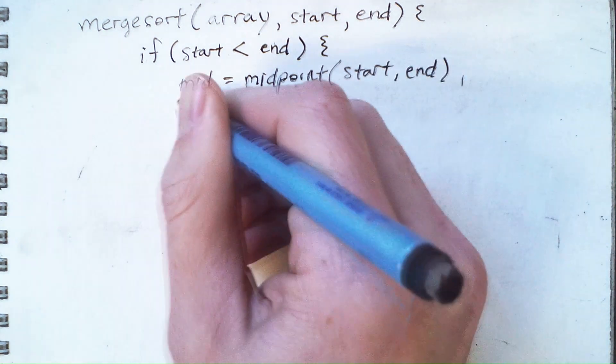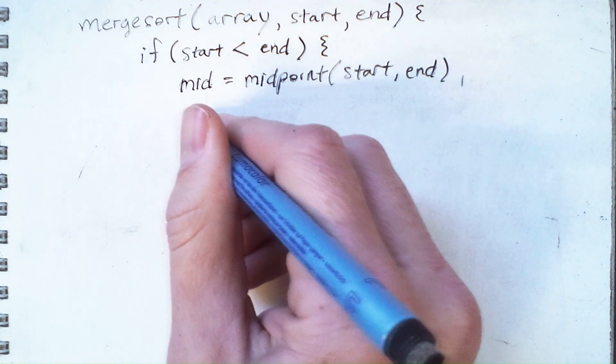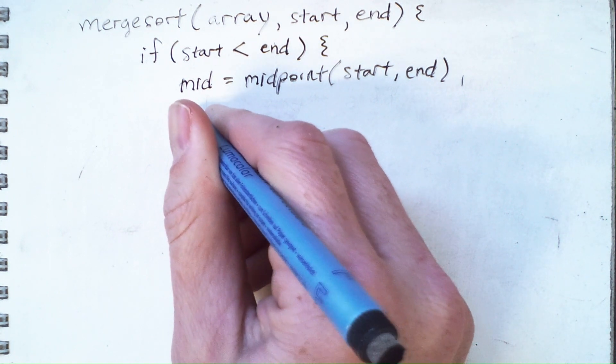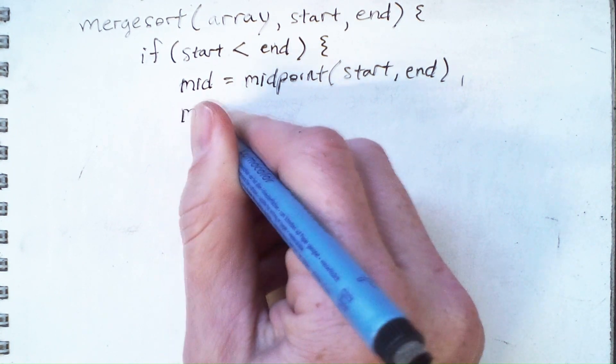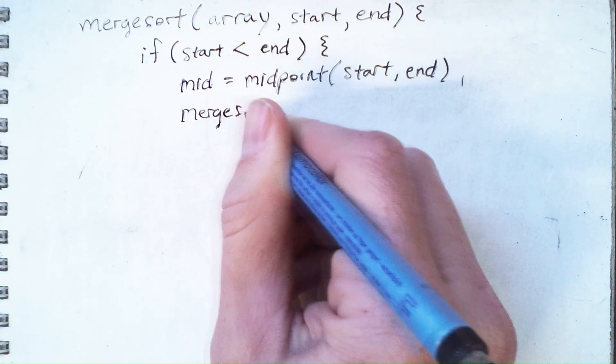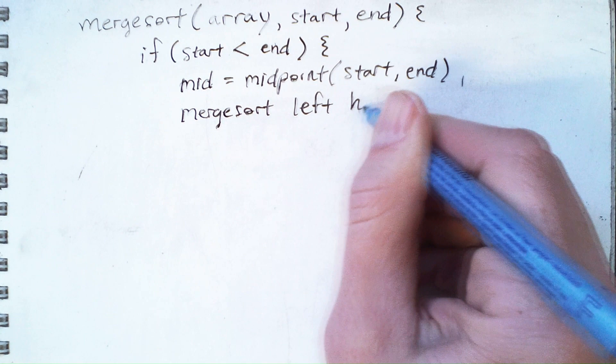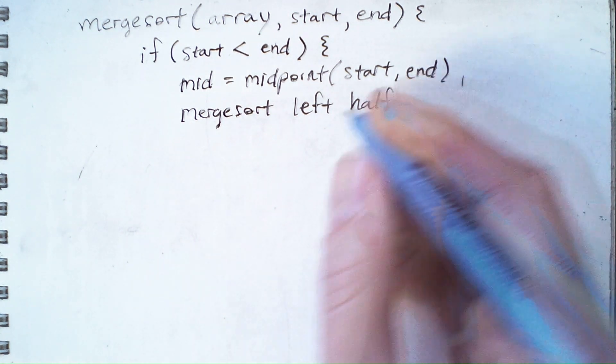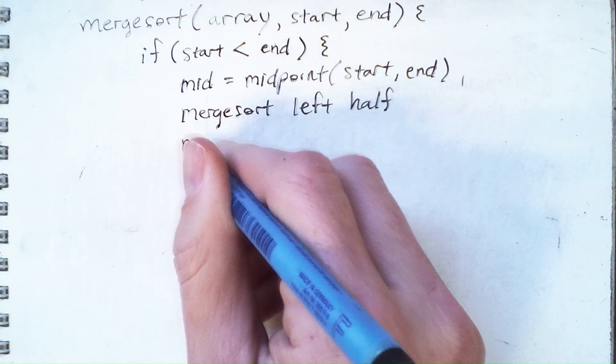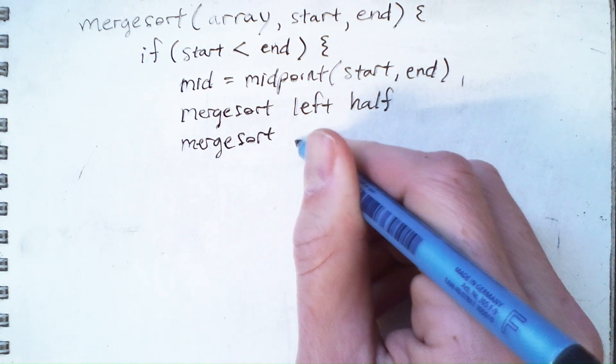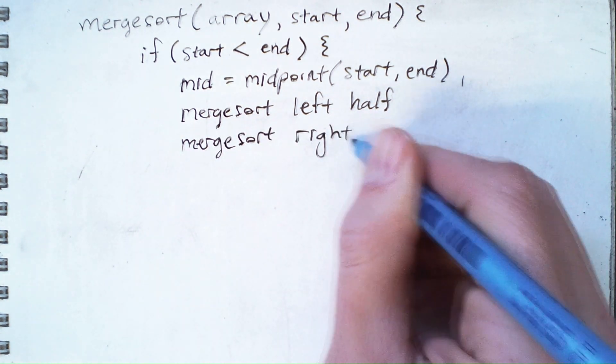And then what we'll do here is, this is where I'm going to use pseudocode and then refine it later, we'll merge sort the left half of the array. And then we will merge sort the right half of the array.